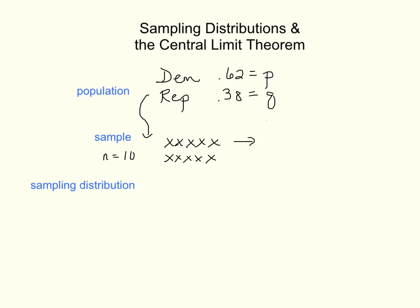And suppose we find out that in this particular case, our sample P, which is called P-hat, is 0.7. So 7 of the 10 were Democrats. Then Q-hat would be 0.3.